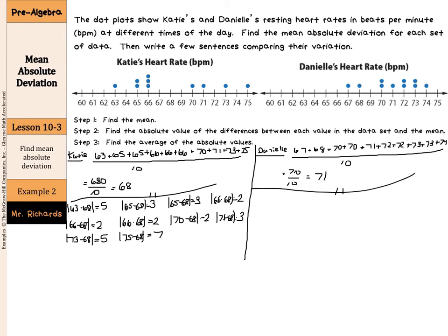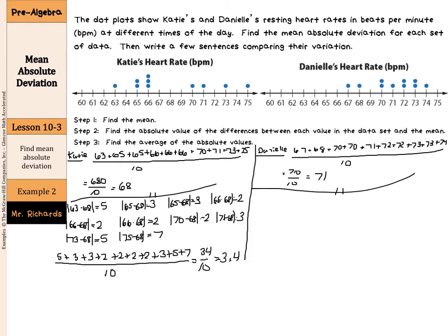Adding these up: 5, 3, 3, 2, 2, 2, 2, 2, 3, 5, and 7, divided by 10 data values. These add up to 34. Divide by 10 and you get 3 and 4 tenths. So Katie's mean absolute deviation is 3 and 4 tenths beats per minute.